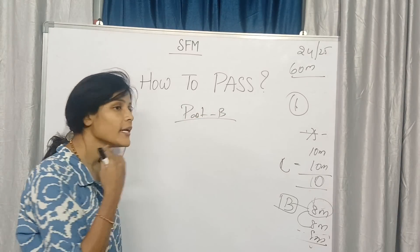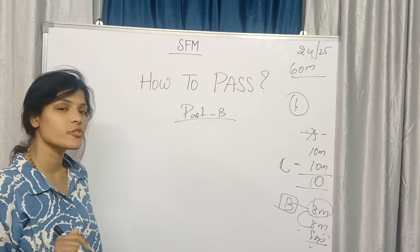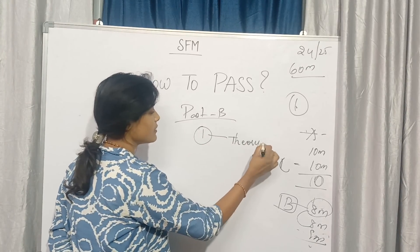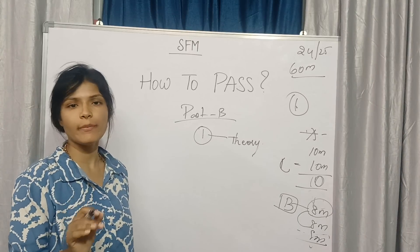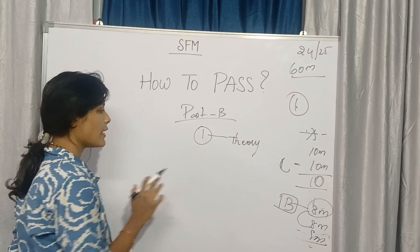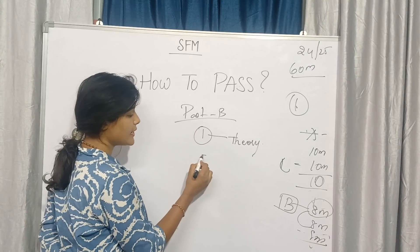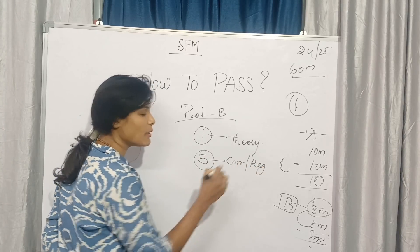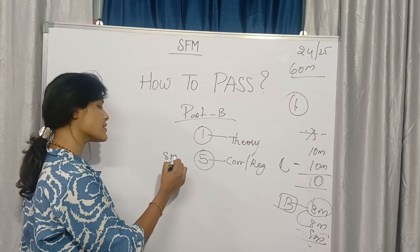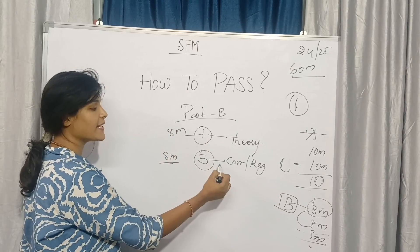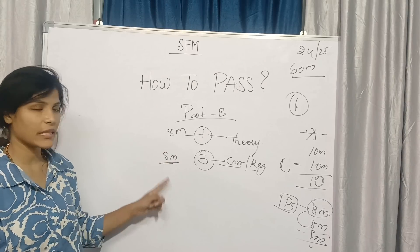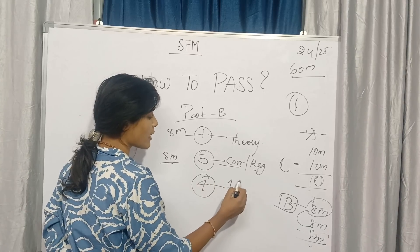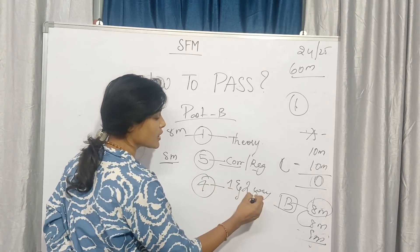In Part B, what chapters do you need to concentrate on? First, go with Unit 1 theory — prepare the theory from Unit 1; if you have prepared problems that's no problem. After completing Unit 1, go to Unit 5 and prepare correlation and regression problems, because they will compulsorily ask an 8-mark problem from either correlation or regression.